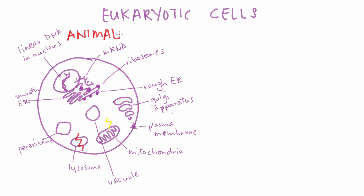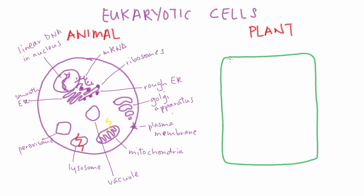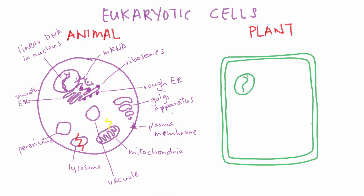So, this is a typical animal cell, but plant cells are slightly different. One of the biggest differences is a strong cell wall around the plasma membrane. It gives the cell structure, strength, and protection. The strength provided by the cell wall is the reason why wood is so strong and trees can be hundreds of metres tall.